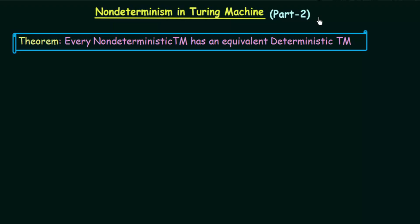In the previous lecture, we studied about non-determinism in Turing machines and we saw how non-deterministic Turing machines work and the difference between non-deterministic and deterministic Turing machines. Now in this lecture we will be seeing if non-deterministic Turing machines and deterministic Turing machines are the same in their computational power.